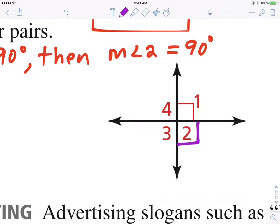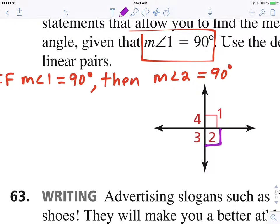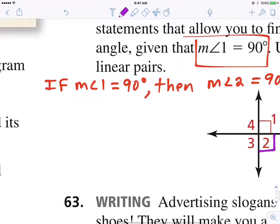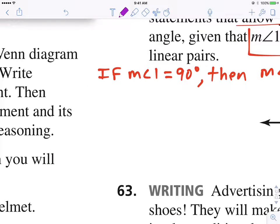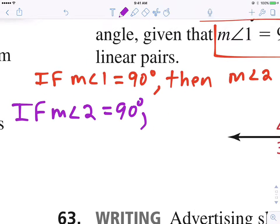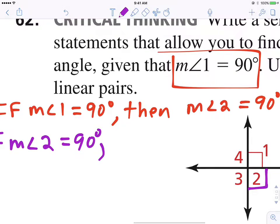Now look at angle two and angle three. Those are linear pairs, right? Angle two and three are linear pairs. So you can write, if the measure of angle two equals 90 degrees, then the measure of angle three is 90 degrees.